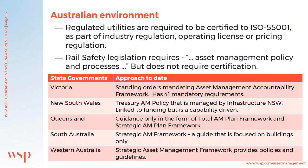Looking at the Australian environment, regulated utilities are required to be certified to ISO 55001 as part of industry regulation, their operating license, or pricing regulation. Examples include Sydney Water, TransGrid, and Western Power. The application of asset management transformed Ausgrid's poles and wires from a liability into a $16 billion sale for the New South Wales government. Rail safety legislation also requires an organization to have an asset management policy and processes in place for all phases of the asset life cycle, though it doesn't require certification.